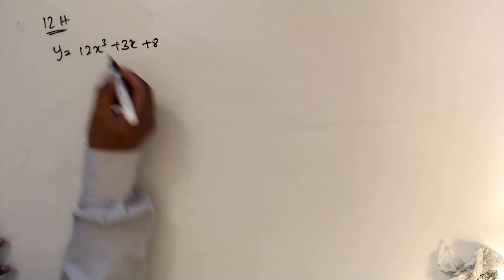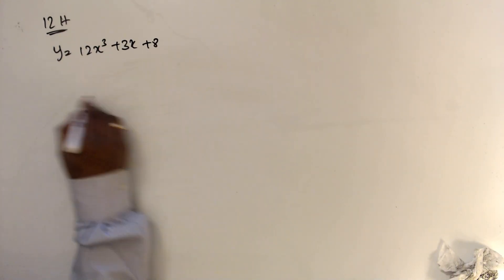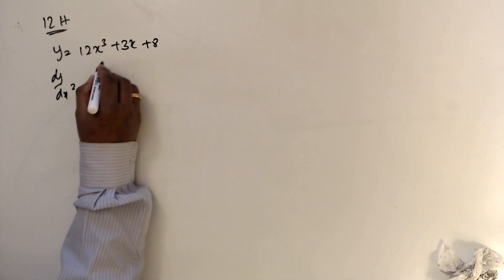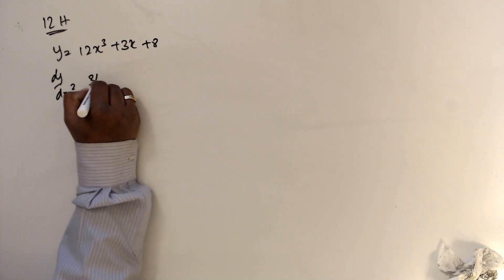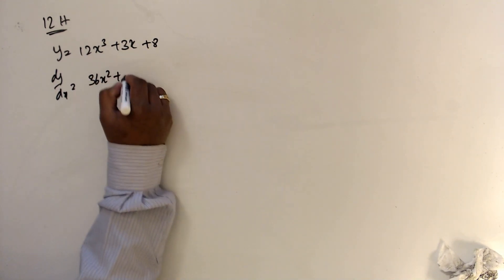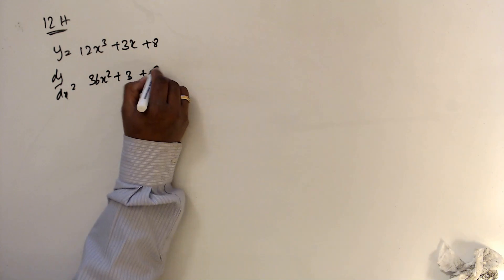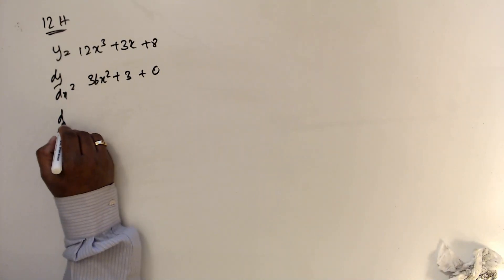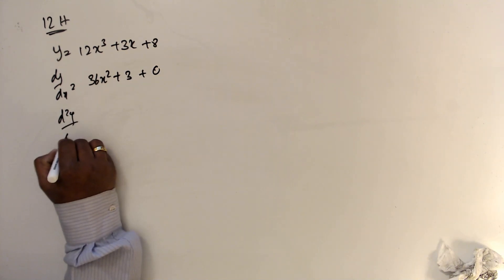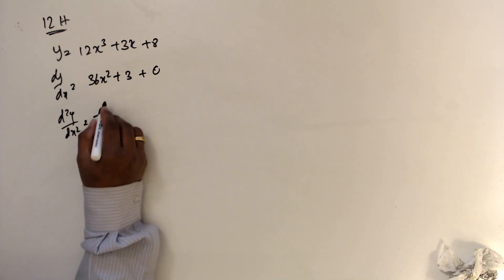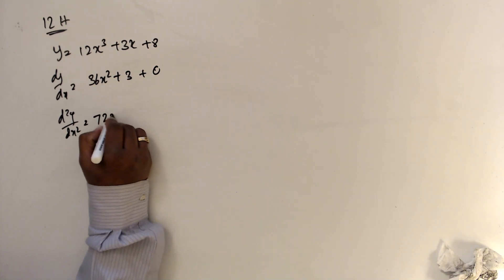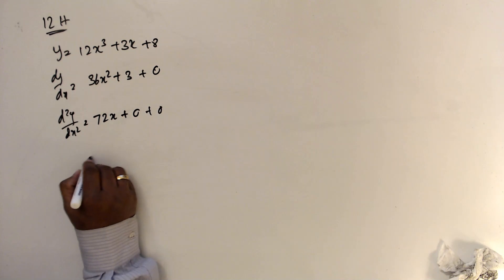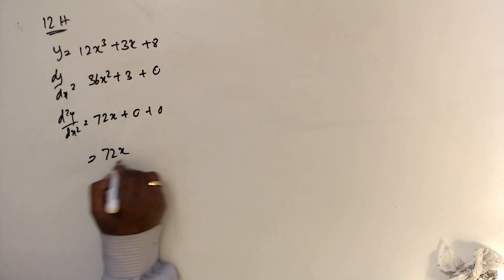Exercise 12h. This one we will discuss. So dy by dx is 3 times 12, 36x squared plus, this is going to be 3, and this is going to be 0. And d squared over dx squared, this is 2 times 36, 72x, plus 0 plus 0. Final answer is 72x.